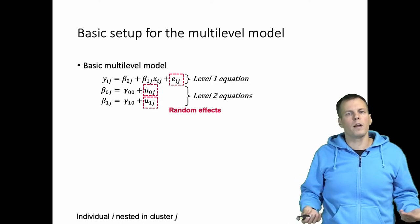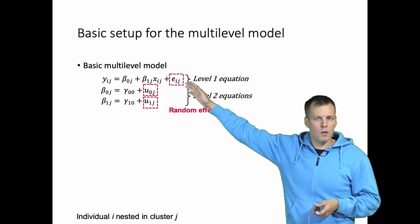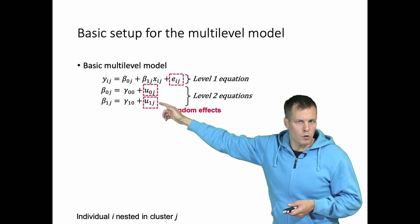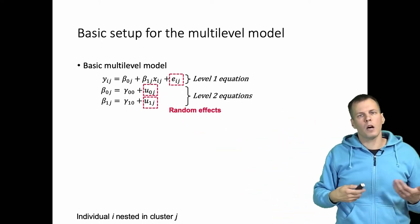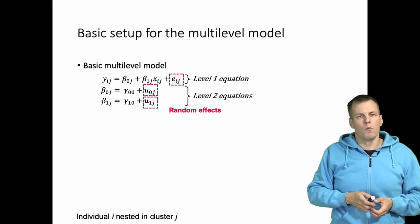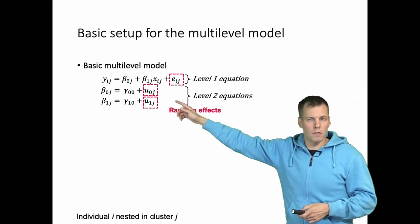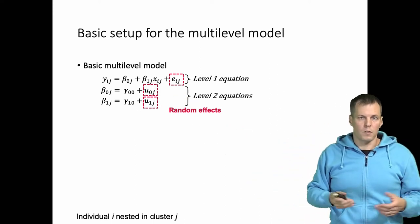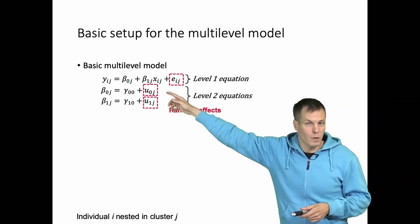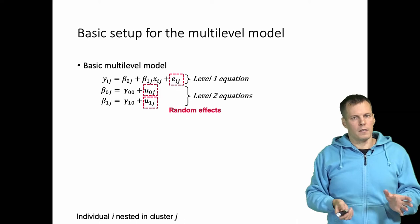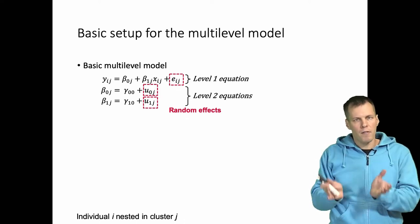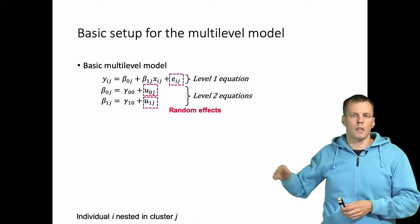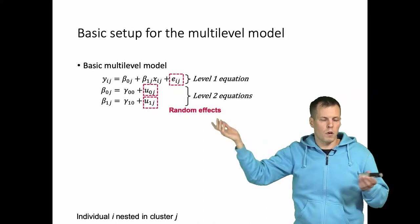So we have three random effects in the model: the variation around the regression line (the level-one error term), the random intercept, and the random slope. This same modeling approach is also used in panel data, where we often have at least a random intercept model. If you read about random effects regression analysis, that could refer to having a random intercept in the model. These random effects are variance components — we estimate variances, not specific values. The reason we estimate variances is that we assume these effects are normally distributed, though other distributions could also be used.